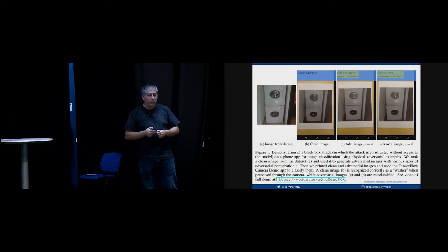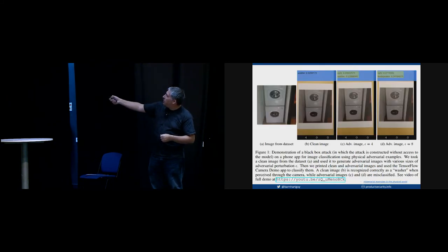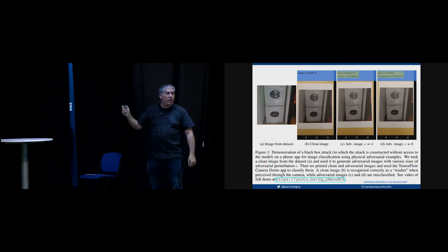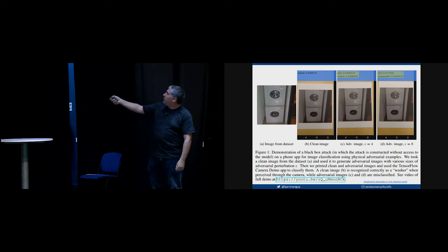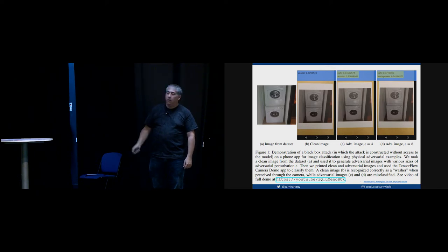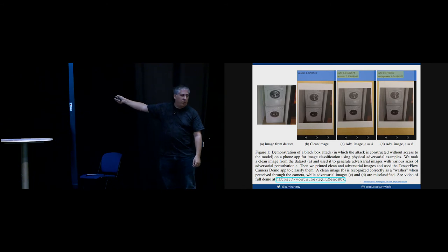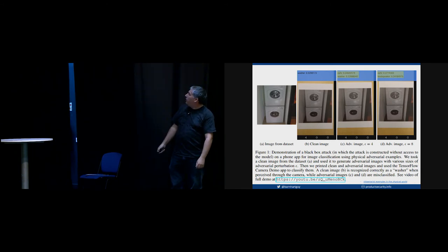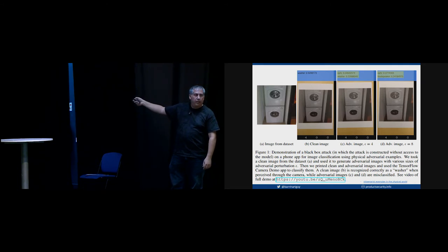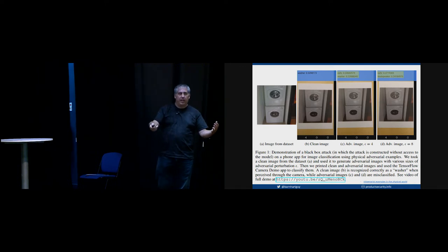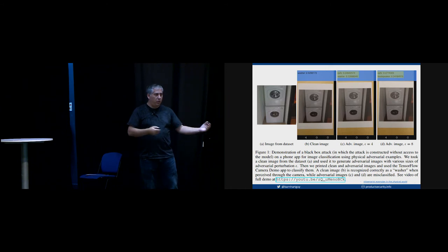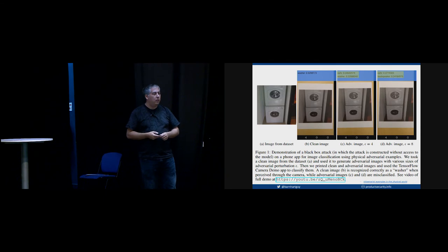Another real-world attack: researchers put stickers — 'love' and 'hate' — on stop signs. These stickers completely confused the system from thinking it's a stop sign to a speed limit sign. They took a picture with an autonomous car driving system in an office environment, and the machine identified the stop sign as a speed limit sign. Think about the scenario: approaching an intersection, there's a stop sign, but the autonomous car reads it as 'speed limit sign, don't go over 65 miles an hour, you may go ahead.' Not a good idea.